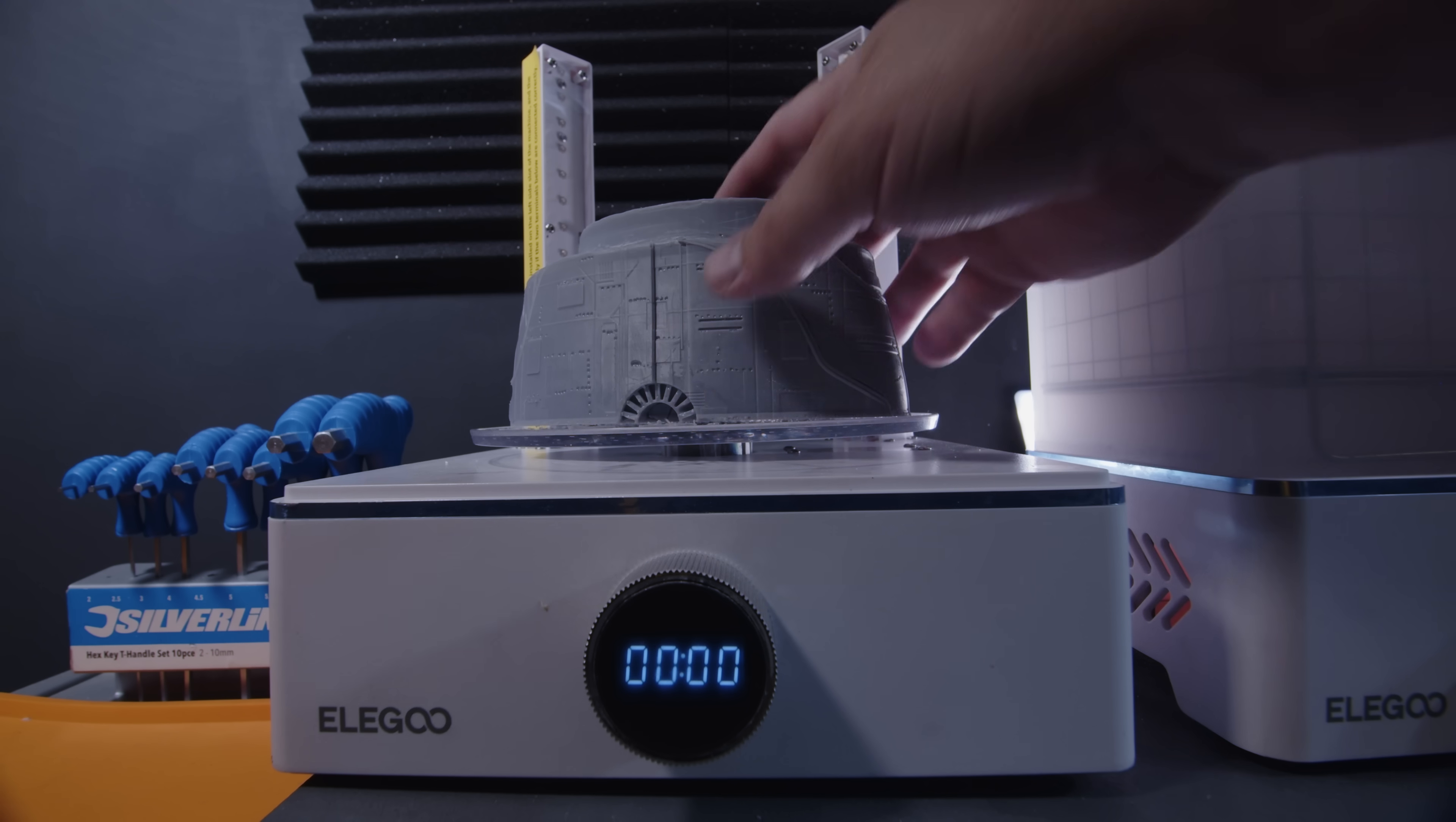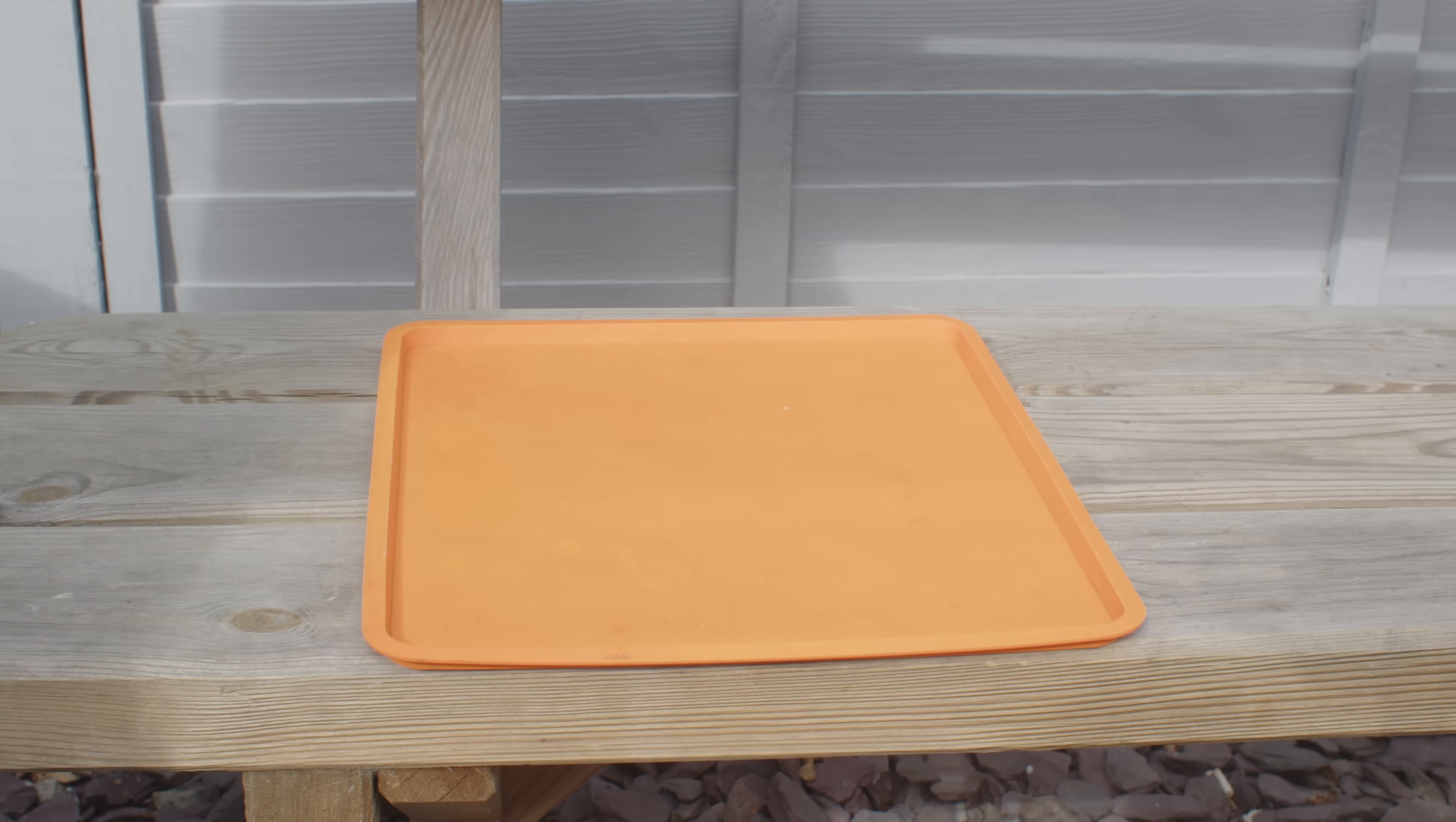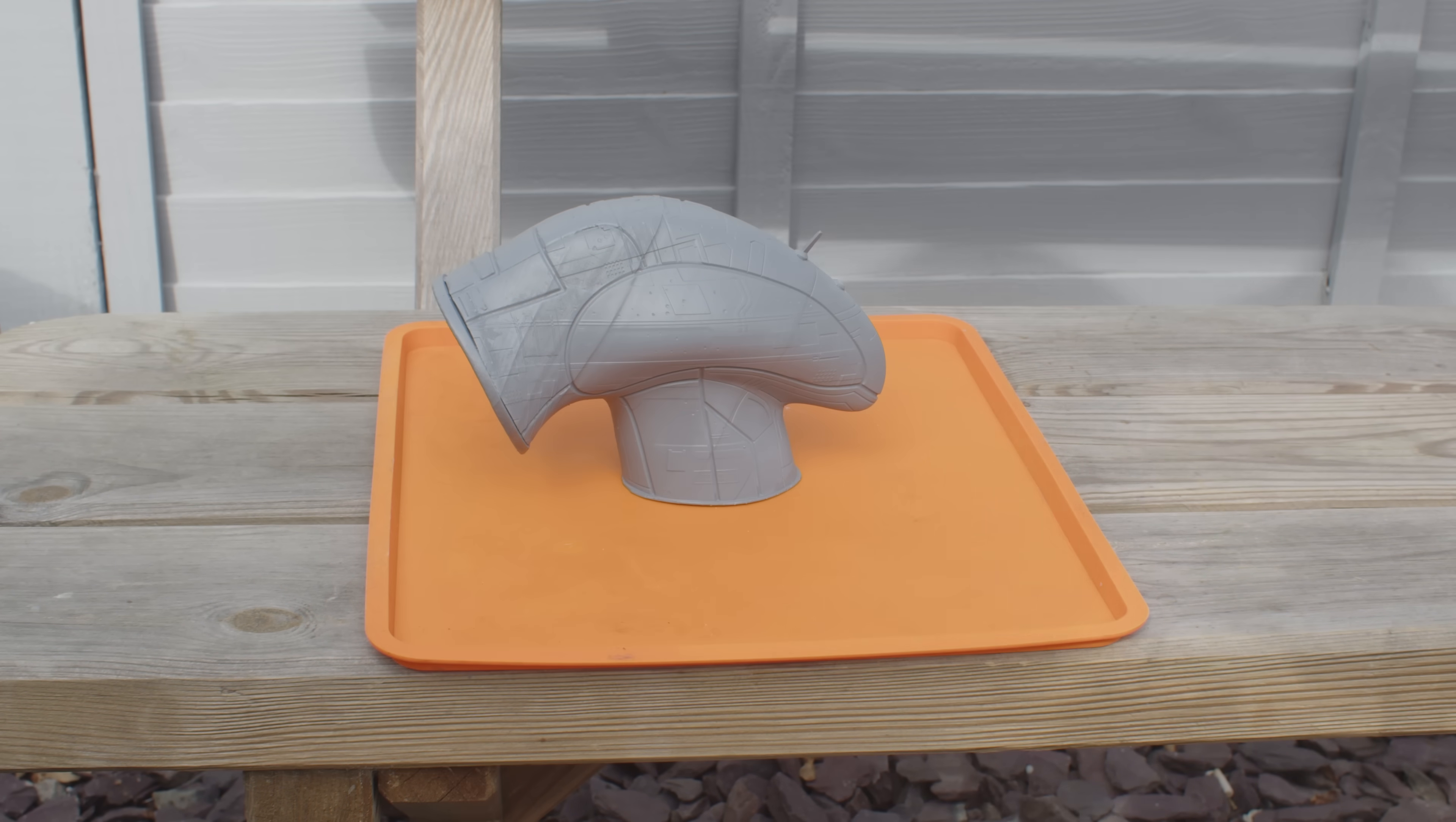A rotating turntable within the machine ensures that the part gets even exposure. Even after curing the part in the machine, I like to take the part outside and expose it to the air and some shaded sunlight. This just allows the part to breathe a little and also gather some extra UV exposure so that the part can completely cure.